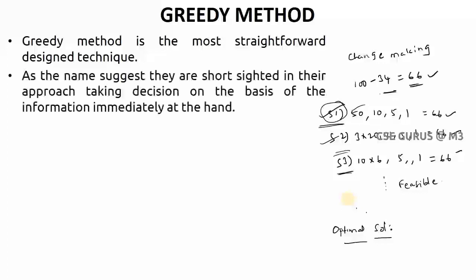As the name suggests, they are short-sighted in their approach, taking decision on the basis of the information. That means here the shop owner is taking the decision immediately on what he has. He is checking for what notes he has.